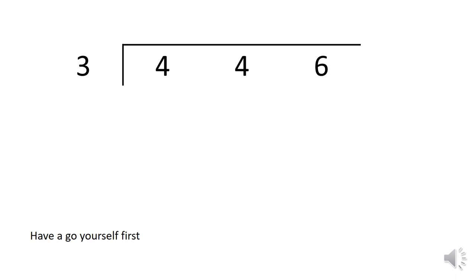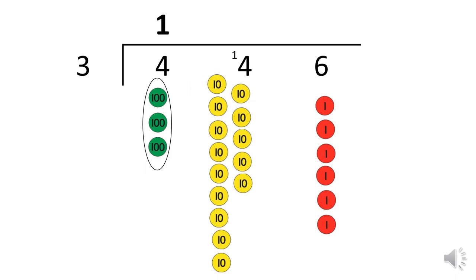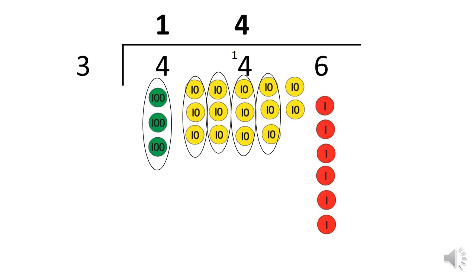Have a go at this one yourself first. Take a pause in the video. So let's look at this together. How many groups of three can I make out of four hundreds? I can make one complete group and the hundred moves across. I now have 14 tens. How many groups of three can I make out of 14 tens?